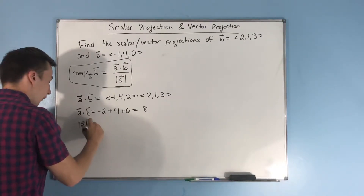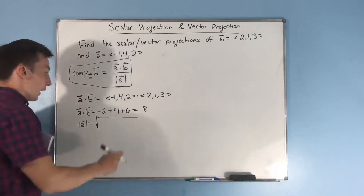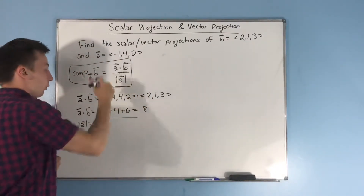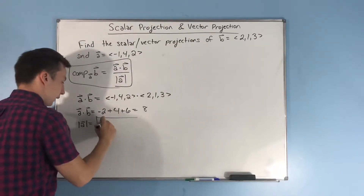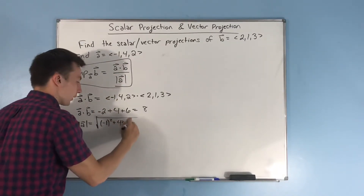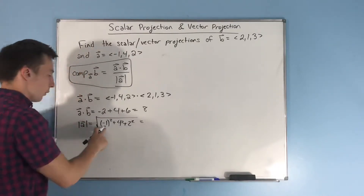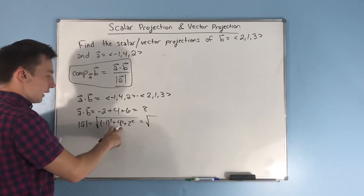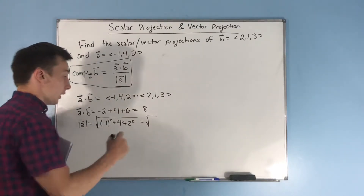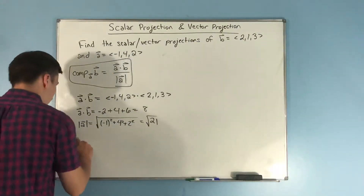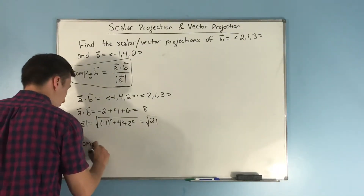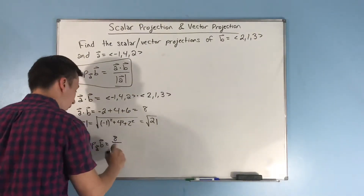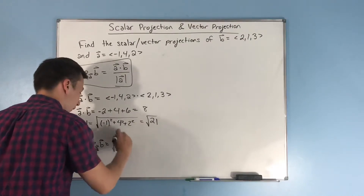Finding the magnitude of A — that's just the distance formula. We're going to have each of our components squared and add them up. So we get negative one squared plus four squared plus two squared, which is going to equal one plus sixteen, which is seventeen, plus four, which is going to be 21. So your component of B onto A is equal to the dot product eight over the magnitude, which is √21.